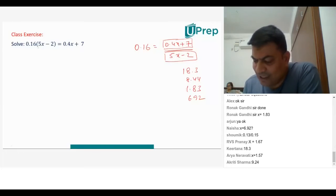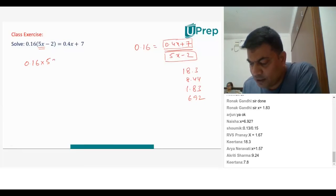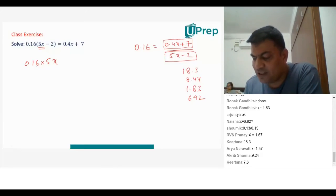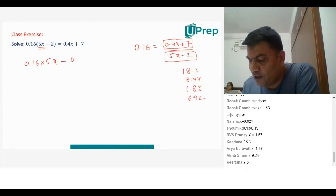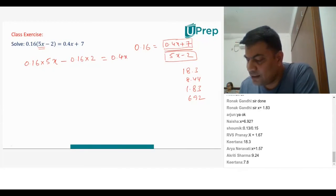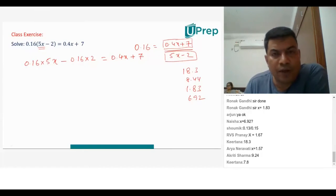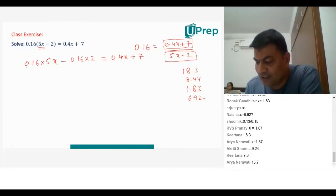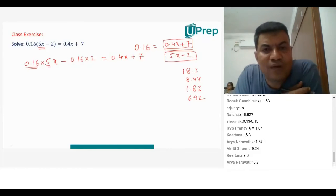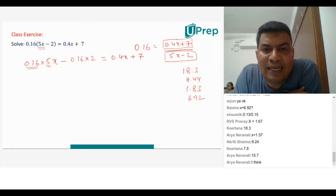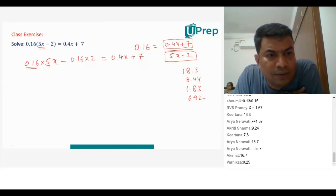Now you have a new problem. So 0.16 into 5x minus 0.16 into 2 is equal to right-hand side 0.4 into x plus 7. So I am writing one more step because you have made mistakes. 0.16 into 5x, minus 0.16 into 2, is equal to 0.4x plus 7. Can I multiply 0.16 into 5? 16 times 5 is 80.